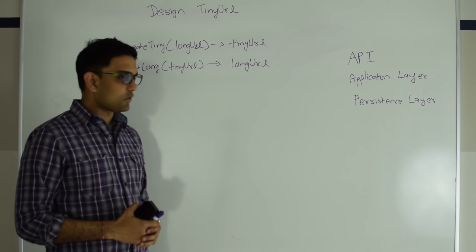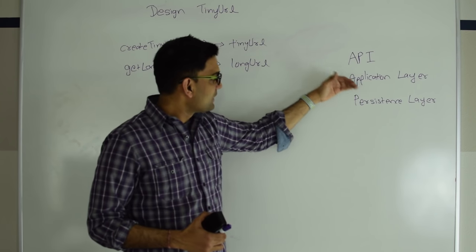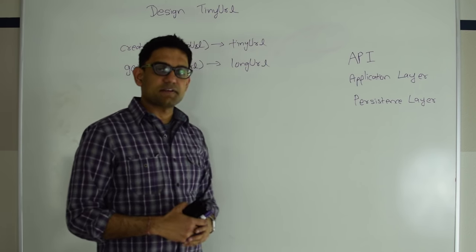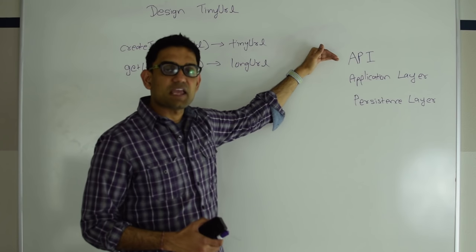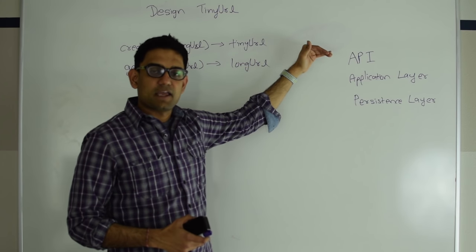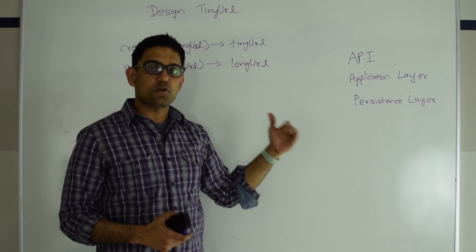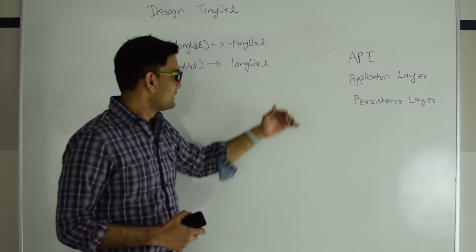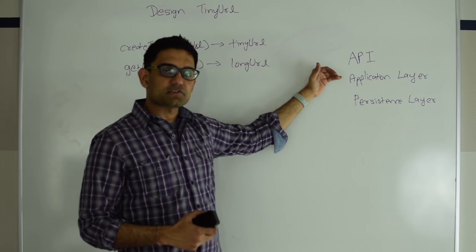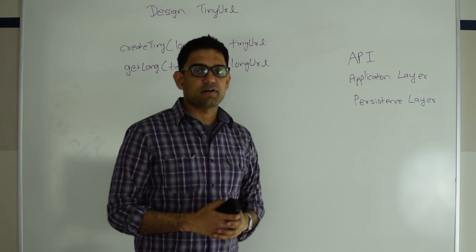When I'm designing a service, I think about these things straight away. First is API — how the user is going to interact with my service. Second is the application layer, and third is the persistence layer.